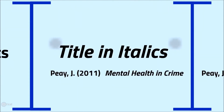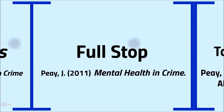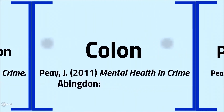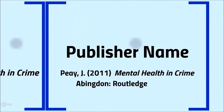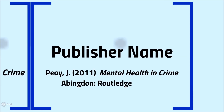The title goes in italics to show that it is the name of the publication, followed by a full stop, and then the town in which it was published, a colon, and finally the name of the publisher. The Coventry University style guide does not include a full stop at the end of the reference.